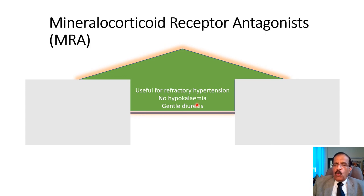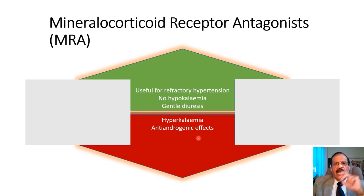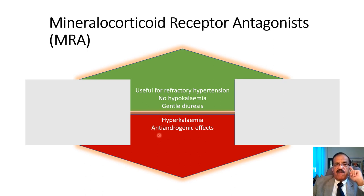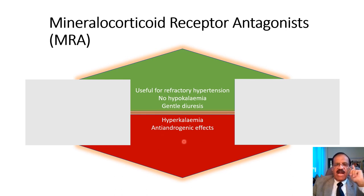These drugs do not cause hypokalemia; in fact they may cause hyperkalemia, and they cause very gentle diuresis so that is hardly an issue. Hyperkalemia is particularly a concern if the patient has chronic kidney disease, and patients should not be taking potassium supplements if they are given mineralocorticoid receptor antagonists. Spironolactone can cause anti-androgenic effects — it can cause gynecomastia and erectile dysfunction, which are very distressing side effects. That is perhaps the reason why these drugs are not used as first-line.